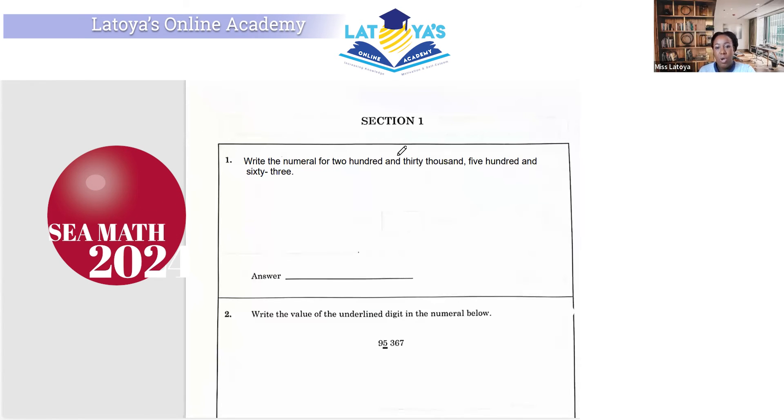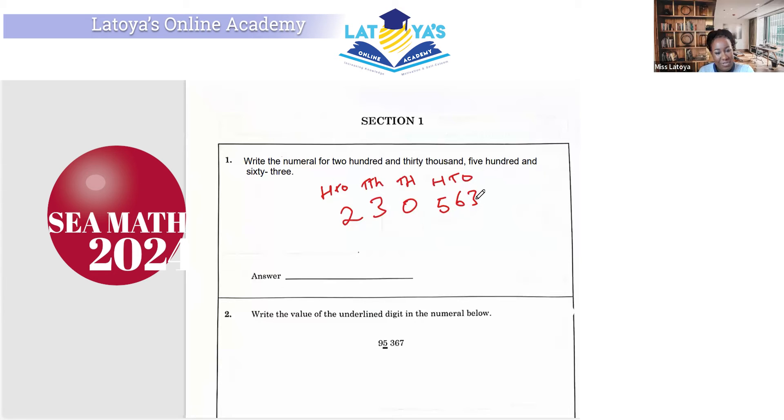So the question says it's 230,000, so you can write hundreds of thousands, tens of thousands, thousands, hundreds, tens, and ones. This is something you can do. So the answer is going to be 230,563. Very easy first question.